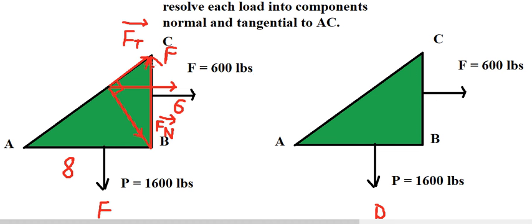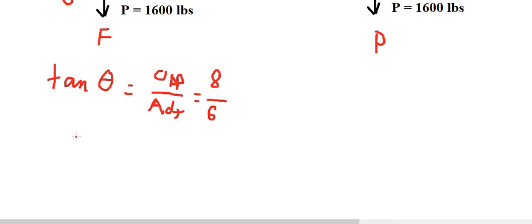We know that F is equal to 600. We also know this angle here, which is alpha. We can use alpha equal to arctan of 8 over 6.